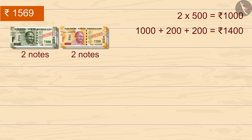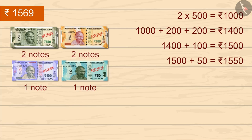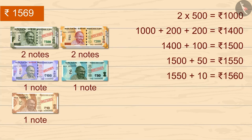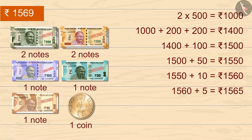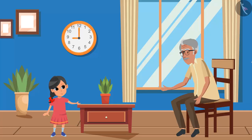One minute, Grandpa. First we'll take 2 notes of 500, which makes 1000 rupees. Then 2 notes of 200 each, so 1000 and 400 gives 1400. Then we'll take 1 note of 100, now it makes 1500. Then 1 note of 50, so it becomes 1550. Then 1 coin of 5, so it becomes 1565. And 2 coins of 2 rupees — now it becomes a total of 1569. Very good, Guddhi!